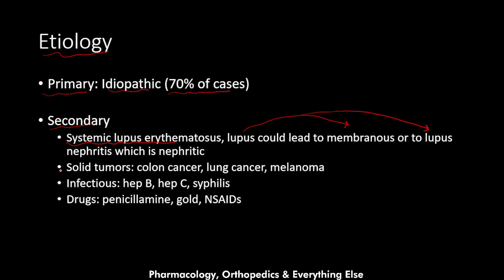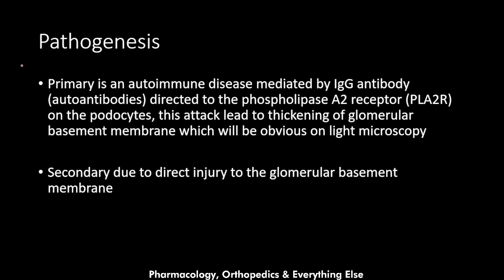Membranous nephropathy is also secondary to solid tumors like colon cancer, lung cancer, and melanoma. It is secondary to infections like hepatitis B, hepatitis C, and syphilis. Sometimes it is secondary to drugs like penicillamine and gold, and sometimes to NSAIDs.